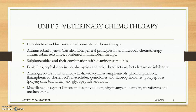Unit 5 is Veterinary Chemotherapy, a large unit. We cover the introduction and historical development of chemotherapy, antimicrobial agents, their therapies and general principles, and antibiotics. The main antibiotics covered are sulfonamides, penicillin, cephalosporins, rifamycins, beta-lactamase inhibitors, aminoglycosides, aminocyclitols, quinolones, fluoroquinolones, polypeptides, glycopeptides, macrolides, and amphenicols. Miscellaneous agents include lincosamides, novobiocin, virginiamycin, tiamulin, nitrofurans, and metronidazole.